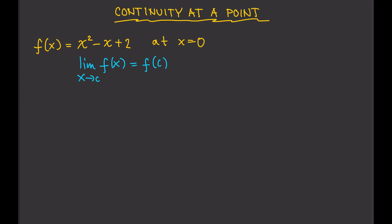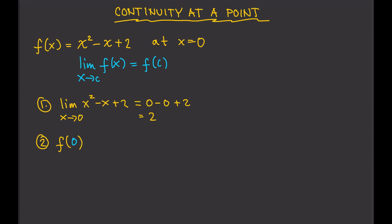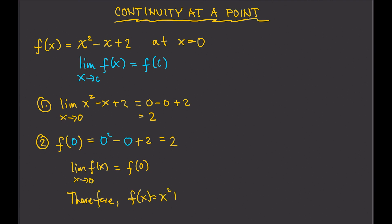Let's look at another example. Perform the test: can we plug in 0 using direct substitution? Yes. So plugging in 0: 0 squared minus 0 plus 2 equals 2. Then evaluating f(0): 0 squared minus 0 plus 2 also equals 2. The limit and f(0) are both equal to 2, so f(x) = x² - x + 2 is continuous at x = 0.